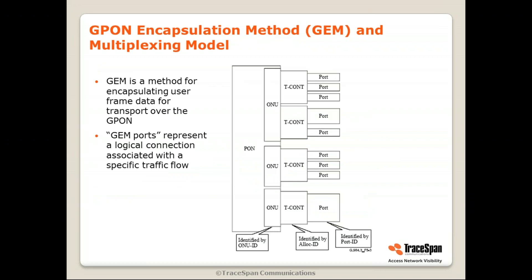Another important term is GEM, GPON encapsulation method. GEM is a method for encapsulating user frame data for transport over GPON. All user frames — data, voice, and video — are transported over Ethernet. GEM ports represent the logical connections associated with specific traffic flows. Different Ethernet traffic streams representing different services or different customers within a building sharing the same ONU would each have a different GEM port. The hierarchy is: a PON has ONUs, each ONU has at least one TCON (sometimes more), and a TCON may have one or more GEM ports. If GEM ports are associated with the same TCON, they typically have the same QoS requirements; if with different TCONs, different QoS requirements.